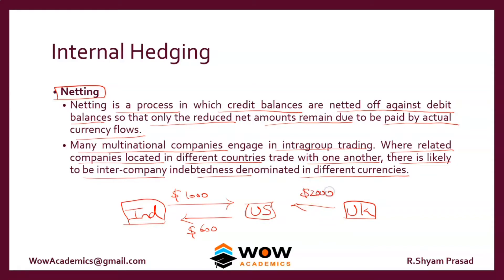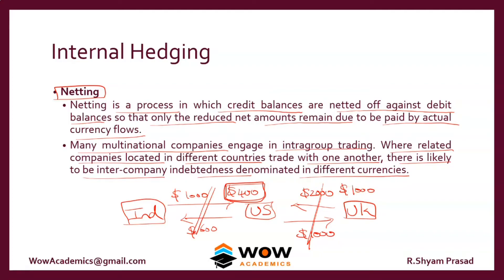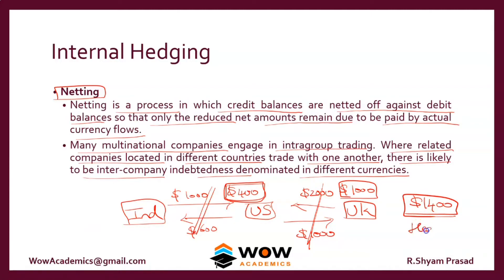For instance, the Indian subsidiary has to pay $1,000 as outflow, the US subsidiary has a $600 outflow, the UK subsidiary has to pay the US subsidiary $2,000, and the US subsidiary pays $1,000 back. By netting out these positions, the company ends up with a net dollar inflow of $400 from India and $1,000 from the UK, giving a total net position of $1,400. The total external hedging required is only for $1,400, rather than each gross transaction individually.